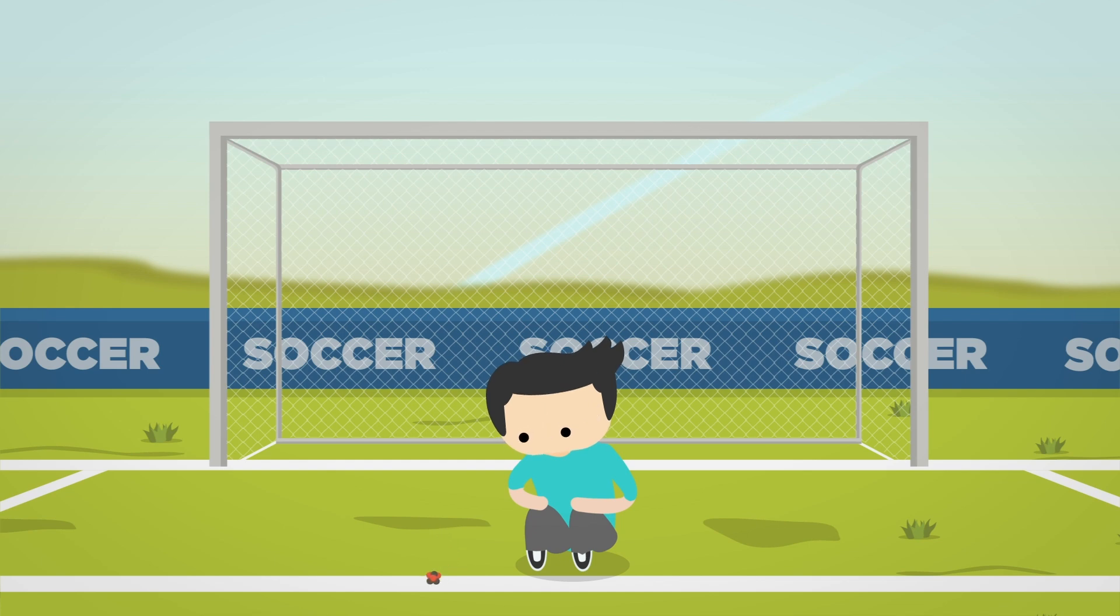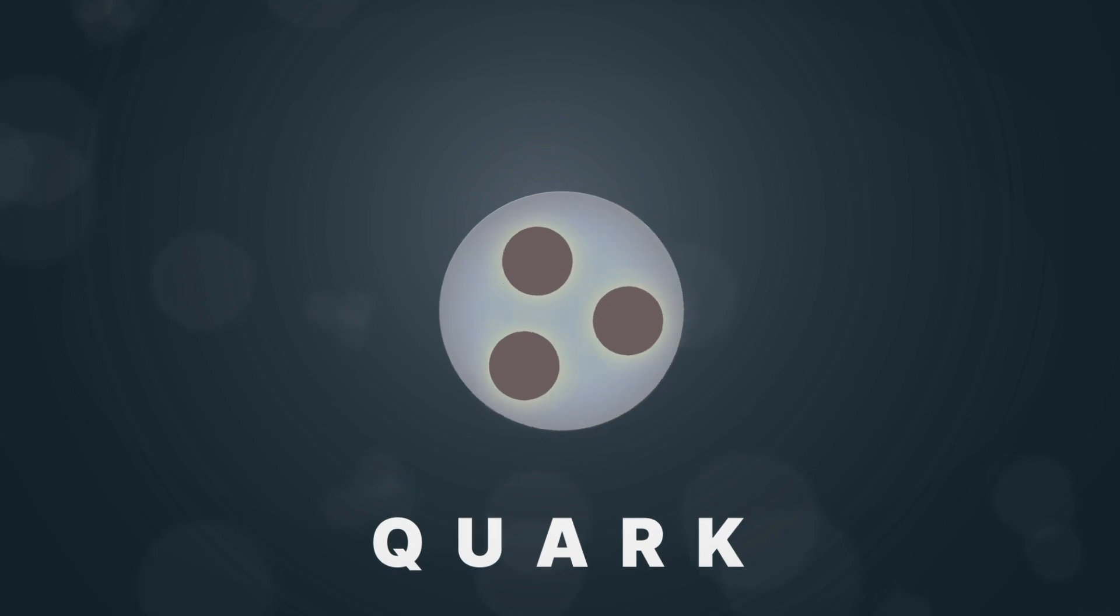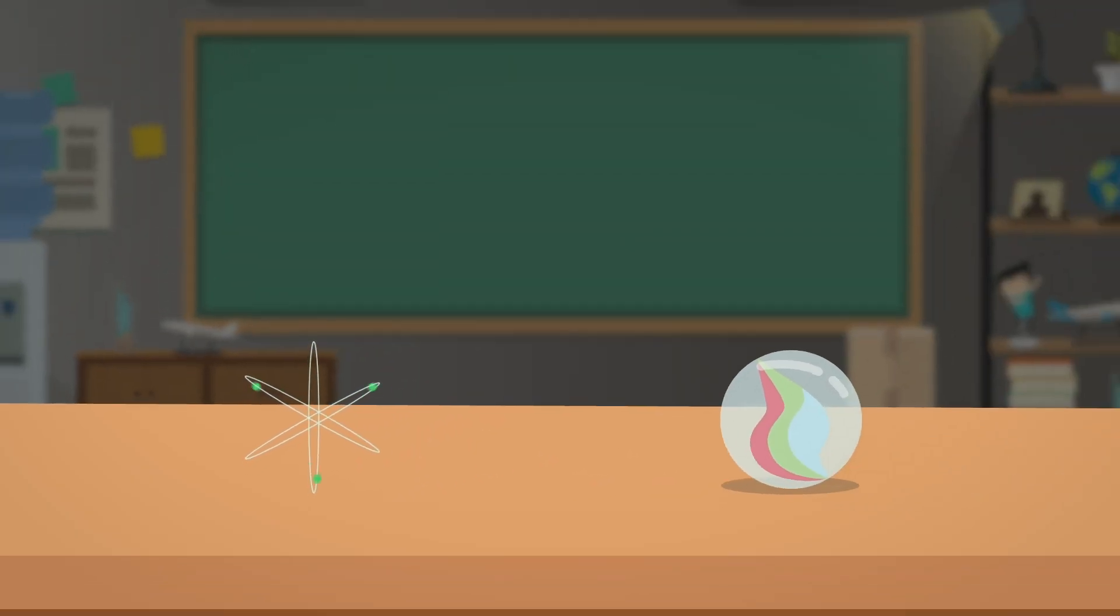But we're not done yet. The atom's nucleus is made up of something even smaller called quarks. These guys are 10,000 times smaller than the nucleus itself, and numbers like that are hard to picture, so let's compare them to the stuff we started with. If we blew up a quark to the size of a marble,